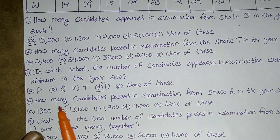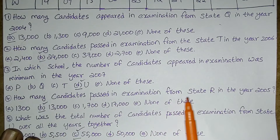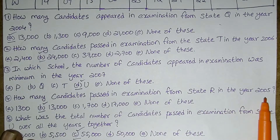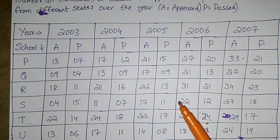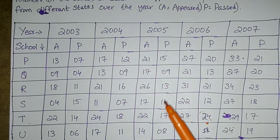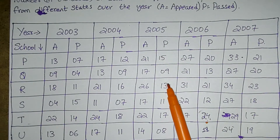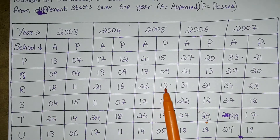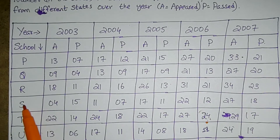How many candidates passed in examination from state R in the year 2005? Under 2005, we look at the passed column for state R. The answer is 30,000 — that is the number of candidates who passed in 2005 under state R.